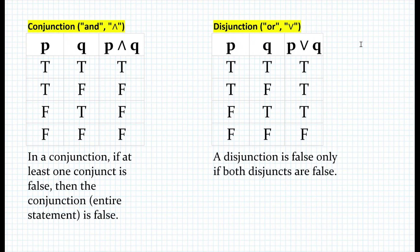Here's the summary of today's lesson. We learned about conjunction, which is the "and" statement using the caret symbol, and about disjunction, which uses "or" with the upside-down caret or V symbol. Remember: in a conjunction, if at least one conjunct is false, the entire statement is false. And a disjunction is false only if both disjuncts are false. If you have any questions, please leave a comment. Don't forget to subscribe and click like. Have a wonderful day. Thank you.